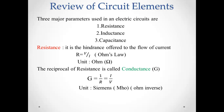If we have an insulator, the current will not pass — the hindrance will increase. This resistance is commonly denoted by the letter R, which is equal to V by I. V is voltage and I is current flowing through the material. This is Ohm's law, which means V is proportional to I, or V is equal to I into R. The proportionality constant is R.